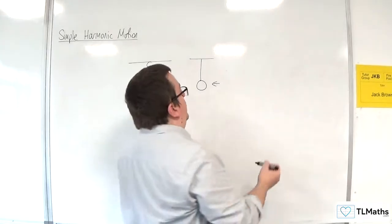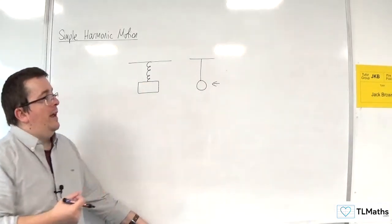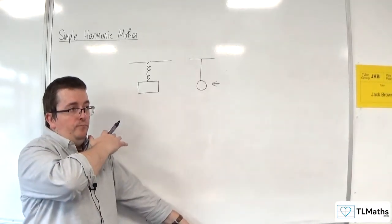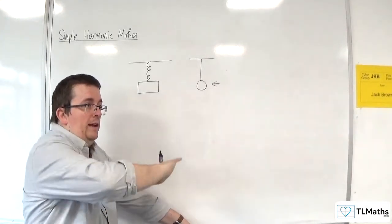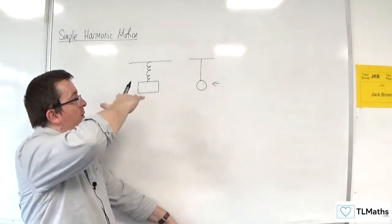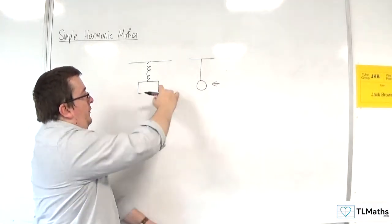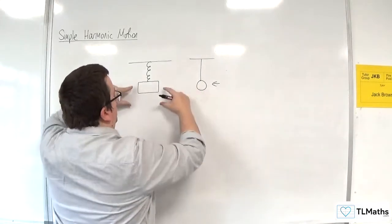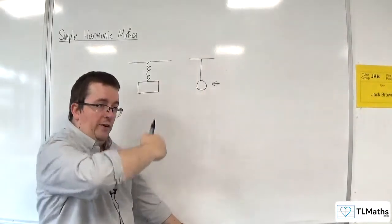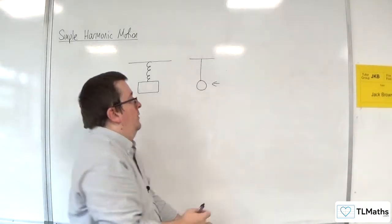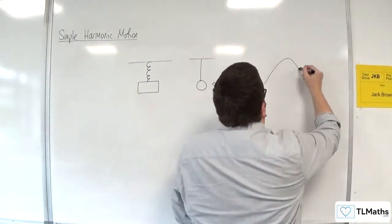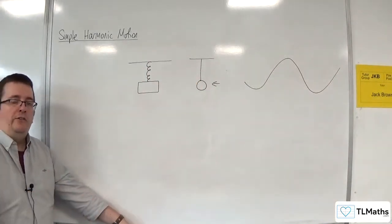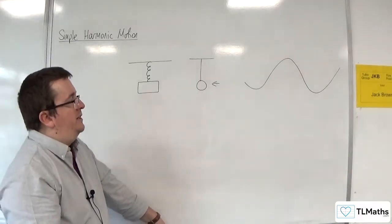Or you could look at the tides — you could look at the height of a tide. And in all of these cases, if you consider the distance that something is being moved — side by side, or up and down, or with the tides the height of the tide — all of these look like a sine curve or a cosine curve, but we can generalise it to a sine curve: a translated sine curve.